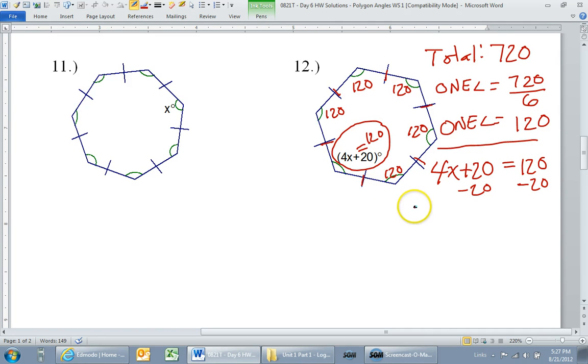So that means 4x is equal to 100. Divide both sides by 4. So x is equal to 25.